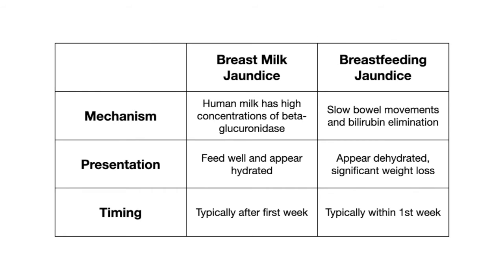With breast milk jaundice, the newborn often appears to be well hydrated and is feeding well, whereas with breastfeeding jaundice the infant appears dehydrated and might even present with significant weight loss. In terms of timing, breast milk jaundice typically occurs after the first week, and breastfeeding jaundice typically occurs within the first week.